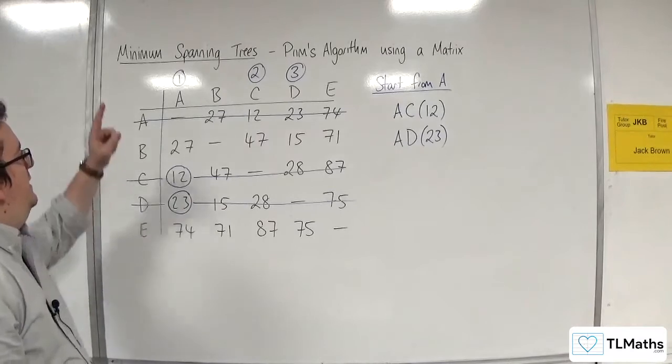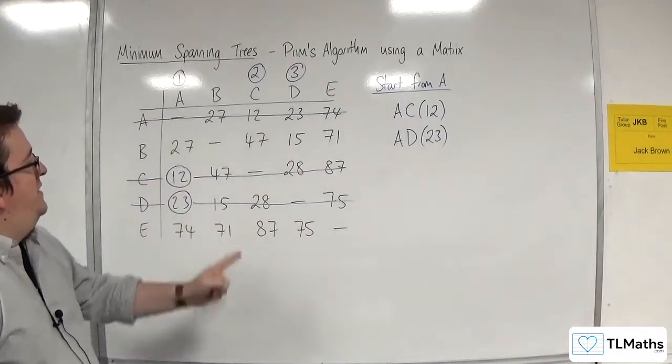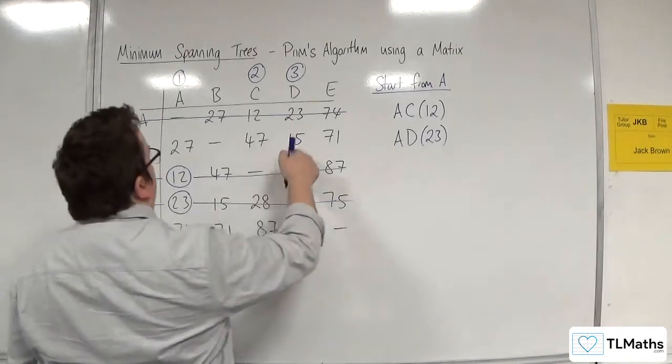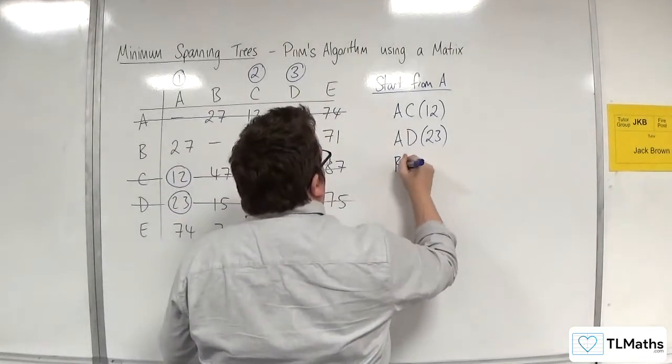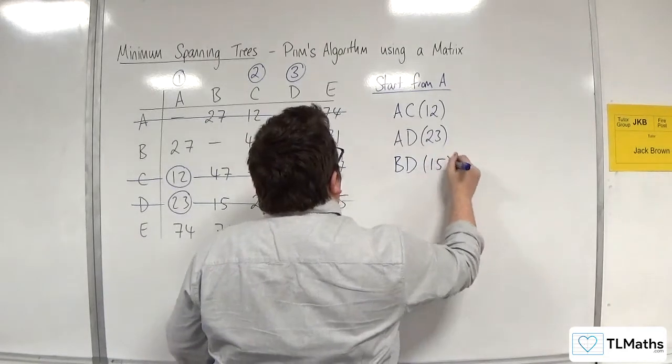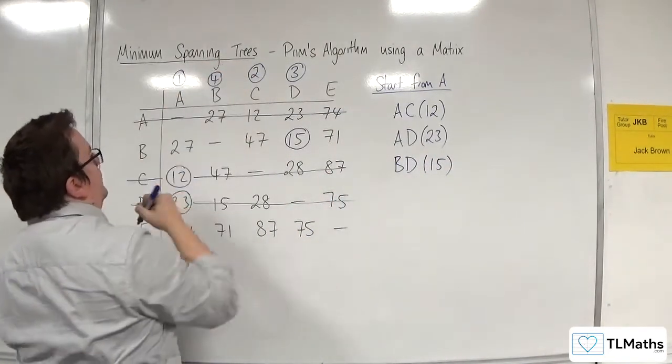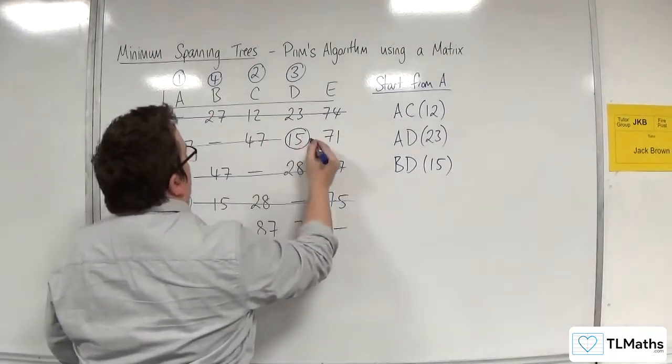So you're now looking down A, C and D and you select the next shortest one, which is the 15. So B, D is 15. I've now connected B, so that gets the number 4. And I delete the rest of the row.